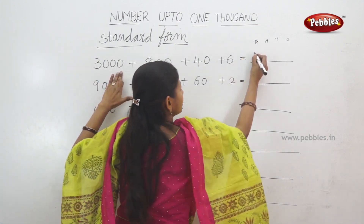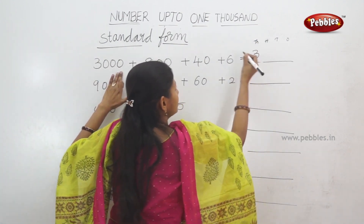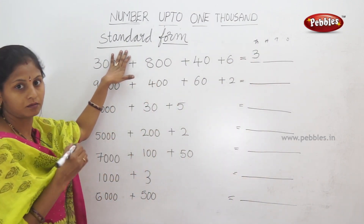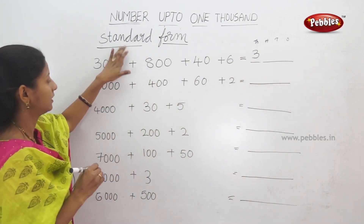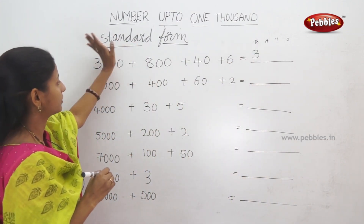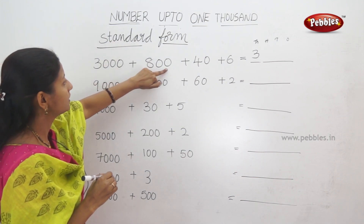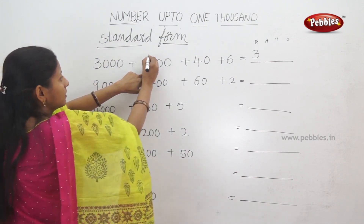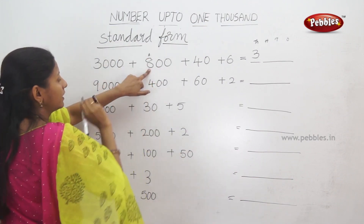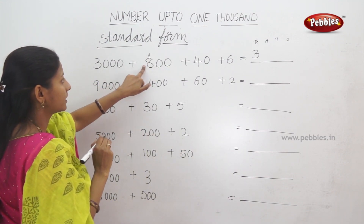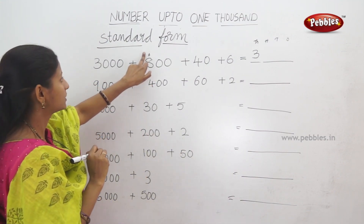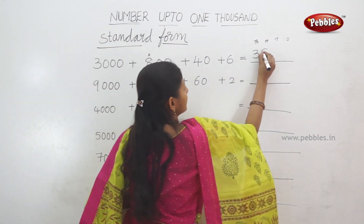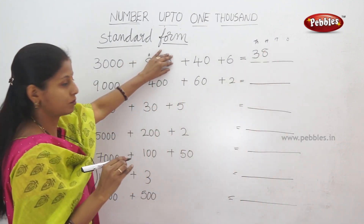So, thousands. So, this number. Next number: ones, 10s, 100s. How many 100s are? 800s. So, 100s place is 8. So, this number.